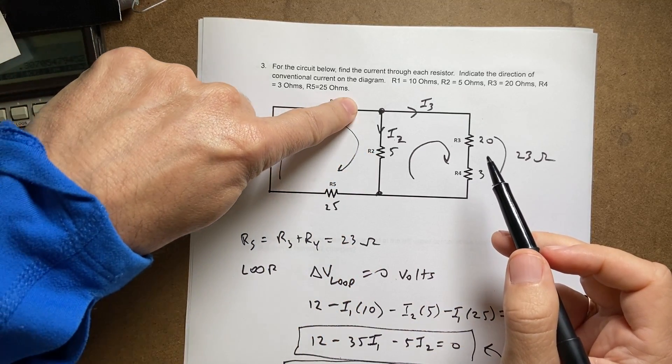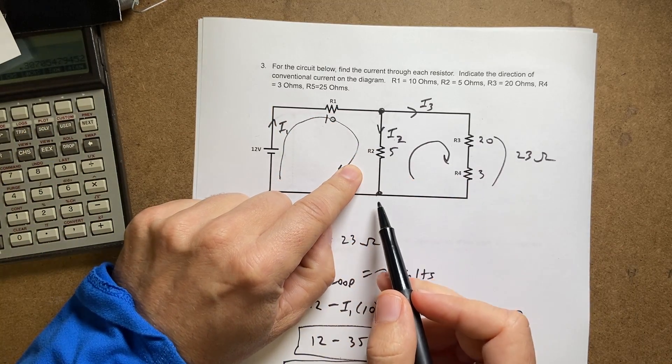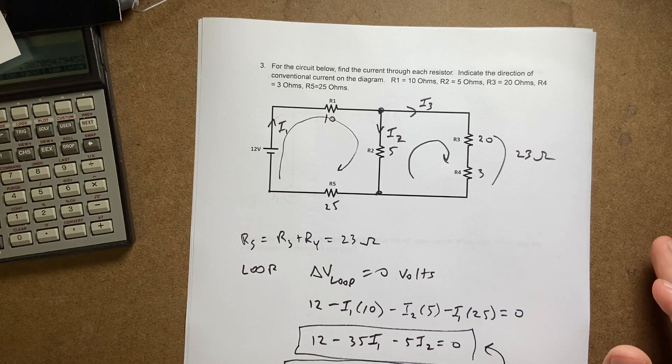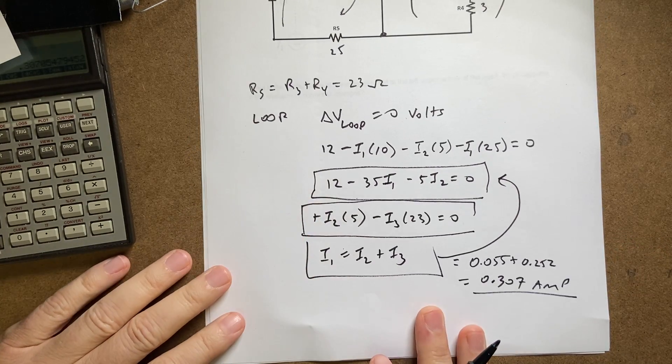Yeah, so that's going to make sense because the current coming out of here—this is a 5 ohm resistor and that's 23 ohms, so a lot more current is going to go through here than there. I just want to check because I got one that was very low and I want to make sure it makes sense. But that's that.